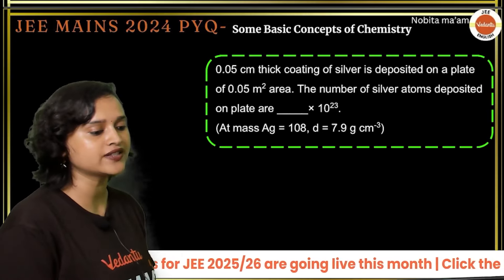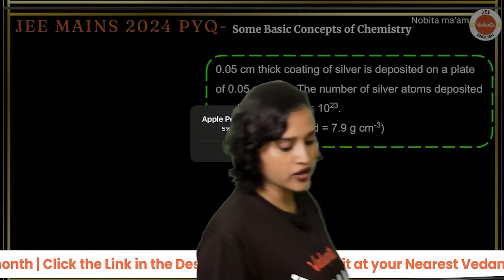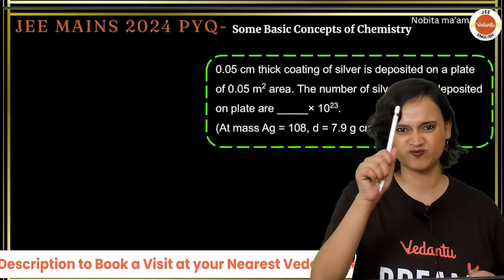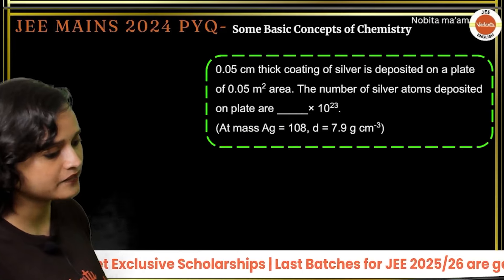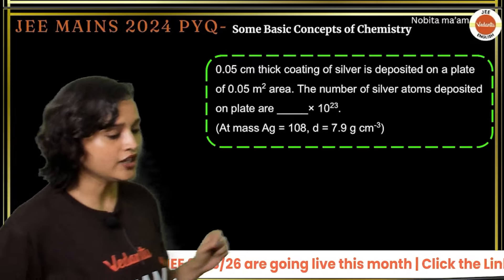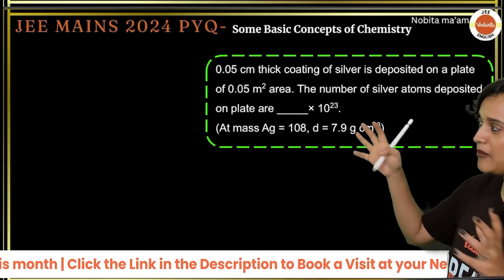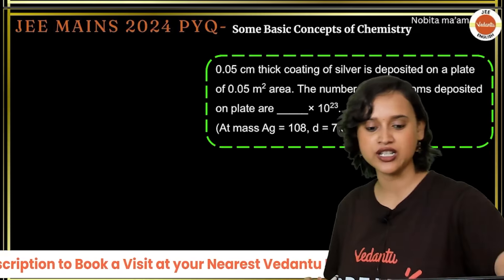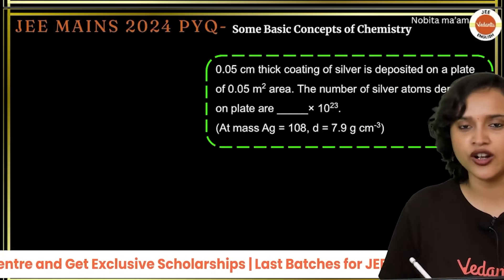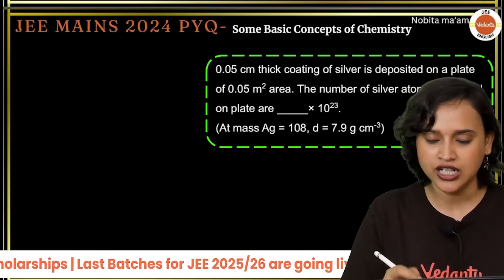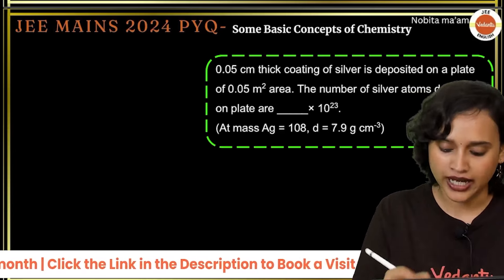The next question: a 0.05 cm thick coating of silver is deposited on a plate of 0.05 m² area. Find the number of silver atoms deposited on the plate. This question combines electrochemistry with stoichiometry concepts — it's a beautiful question that requires using both topics together.